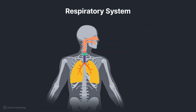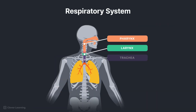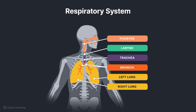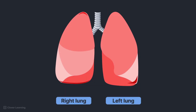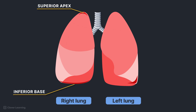The respiratory system consists of the pharynx, larynx, trachea, bronchi, and two lungs. The pharynx is considered part of the upper airway, which will be discussed in a separate lesson. The trachea extends into the thoracic cavity through the mediastinum to the carina, where it bifurcates, or divides, into the two primary bronchi. The left and right primary bronchi enter the lungs and divide into the bronchial trees. The lungs are the organs of respiration and provide the mechanism for introducing oxygen into the blood and removing carbon dioxide from the blood.